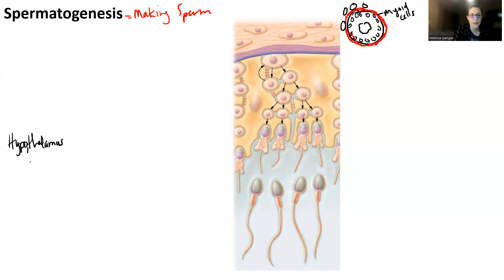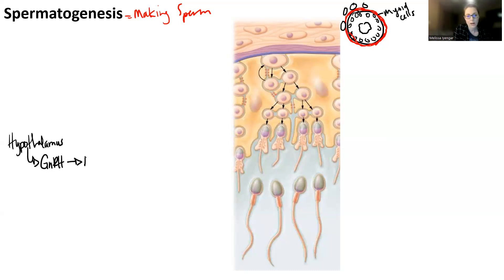The hypothalamus is going to release gonadotropin-releasing hormone. You need to know what GnRH stands for — I'm just abbreviating because it's easier during the video. Gonadotropin-releasing hormone targets the anterior pituitary gland, and you need to write those things out, not just abbreviate them.